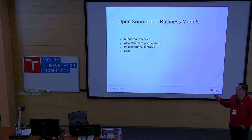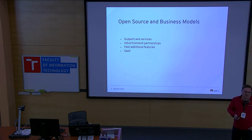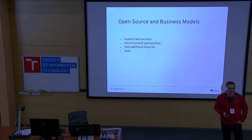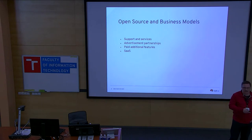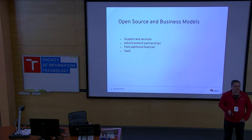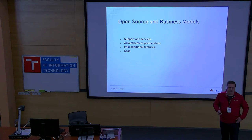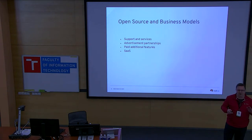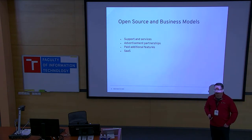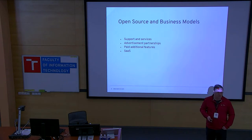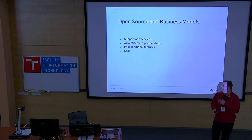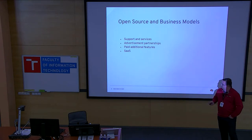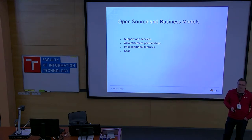And then software as a service — that's a model WordPress uses. You can get WordPress as an open source content management system and install it on your own server, run it, no charges. But if you want to avoid all the administration tasks and just use the blogging services, you go to WordPress.com, pay some annual fee, and they maintain the service for you. That's the last of the sustainable models.